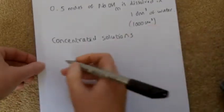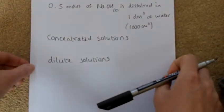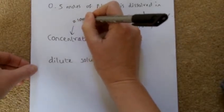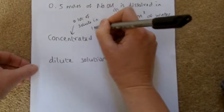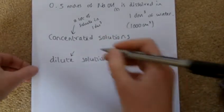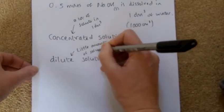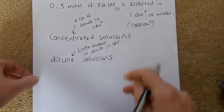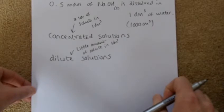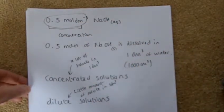Sometimes we use the terms concentrated solutions and dilute solutions. Concentrated means there is a large amount of solute per dm³ of water. A dilute solution means there is not much solute — a little amount of solute per dm³. So concentrated means a lot of solute, and dilute means not a lot of solute.